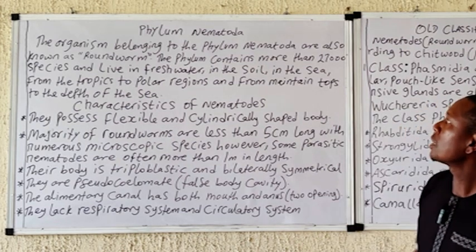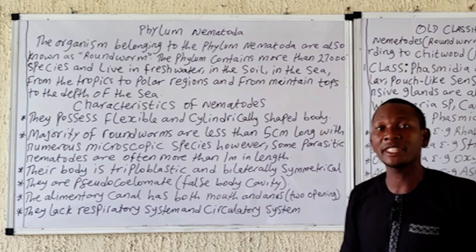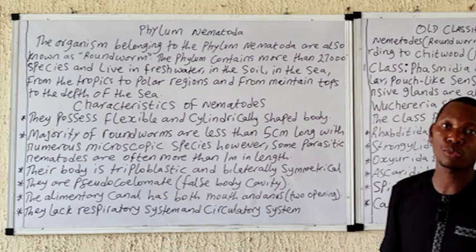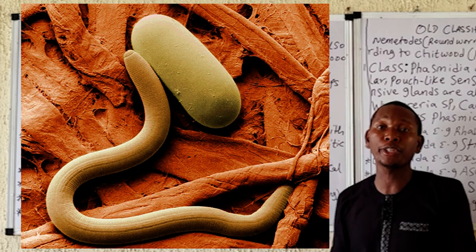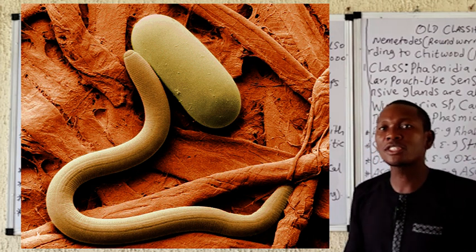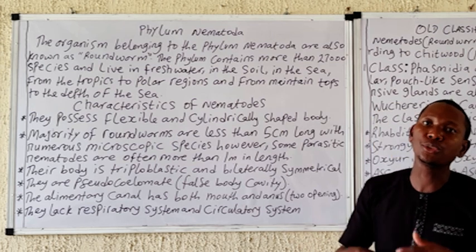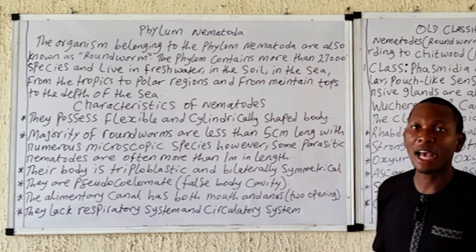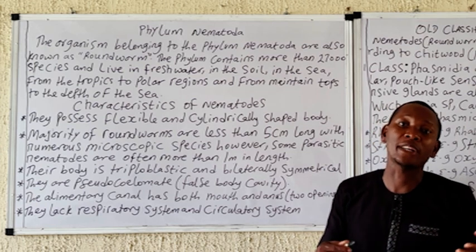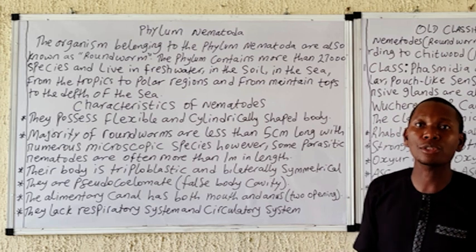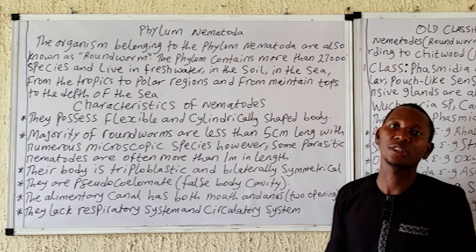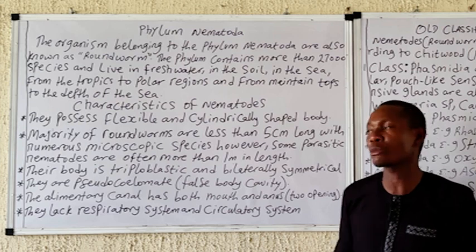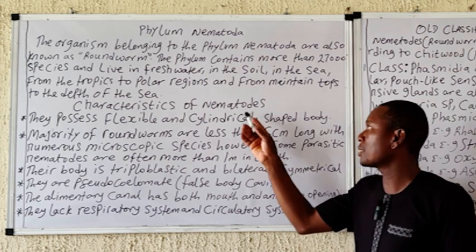The phylum Nematoda comprises organisms that are generally regarded as the roundworms, and this phylum actually contains more than 27,000 species. Some of these organisms are free-living while others are parasitic. These organisms play a critical role in nutrient cycling in nature, and some cause various diseases such as ascariasis, hookworm, elephantiasis, or filariasis.